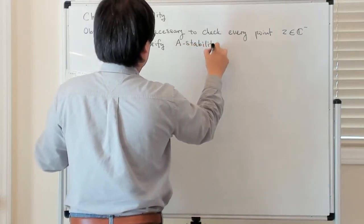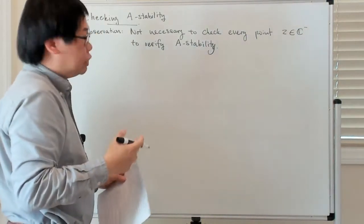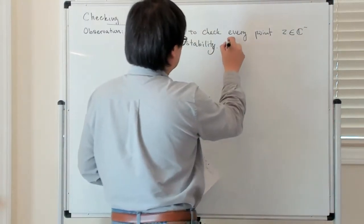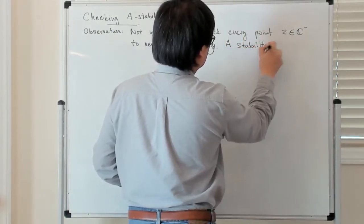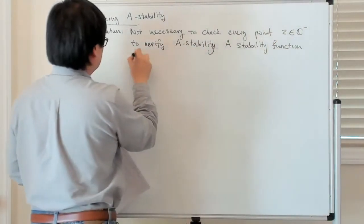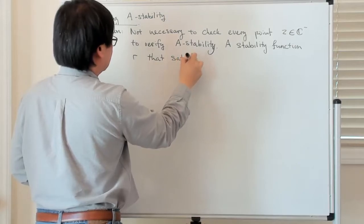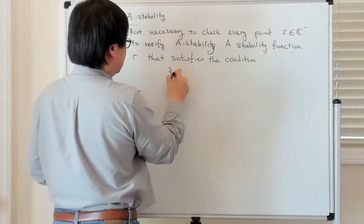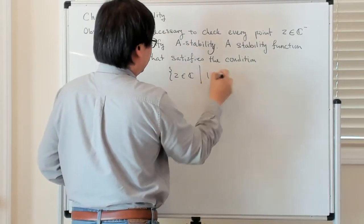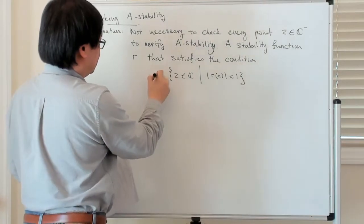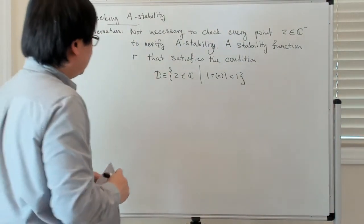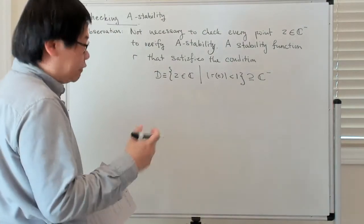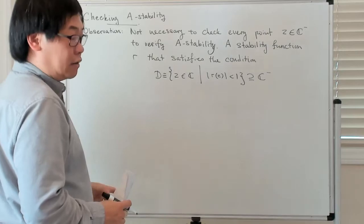A stability function which satisfies this condition is what is sometimes referred to as A-acceptable. So a stability function R that satisfies the condition — which is the set of Z in the complex plane such that the modulus of R(Z) is less than 1, which is just the stability region — if this stability region contains C-negative, the left half complex plane, then we say that this R-function is A-acceptable.